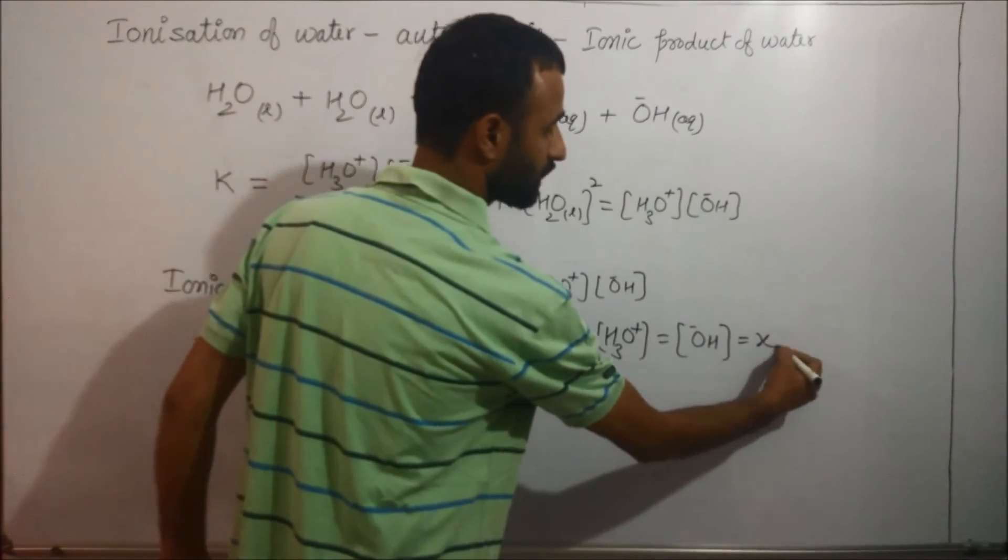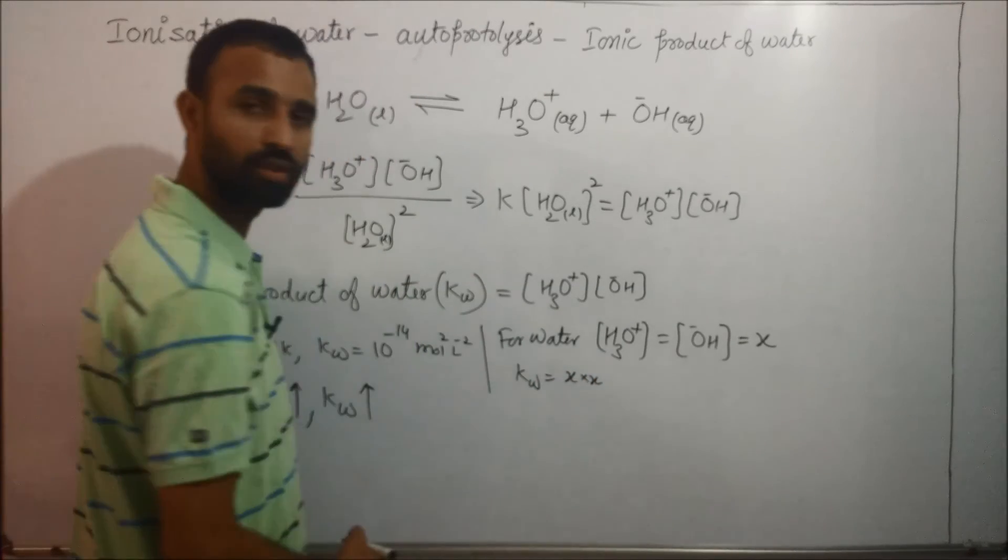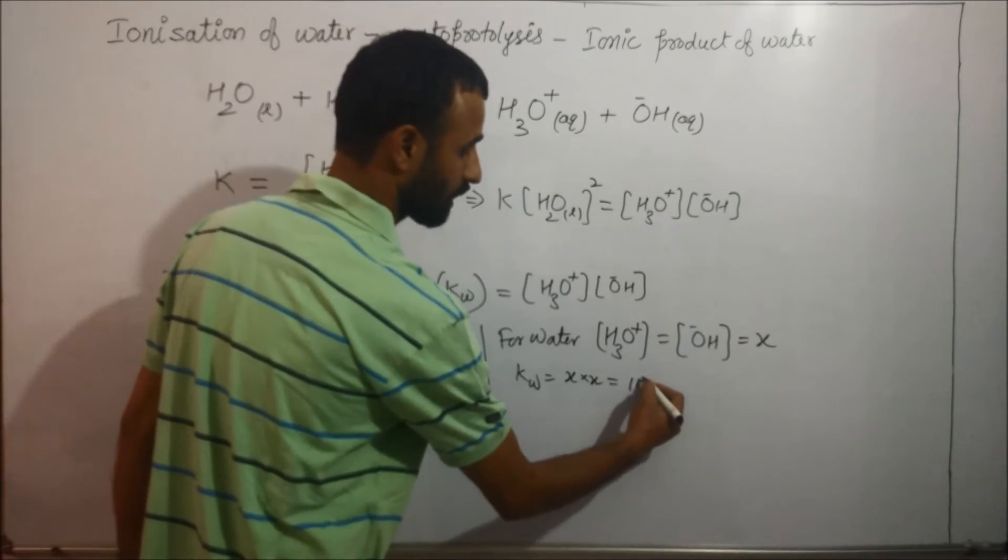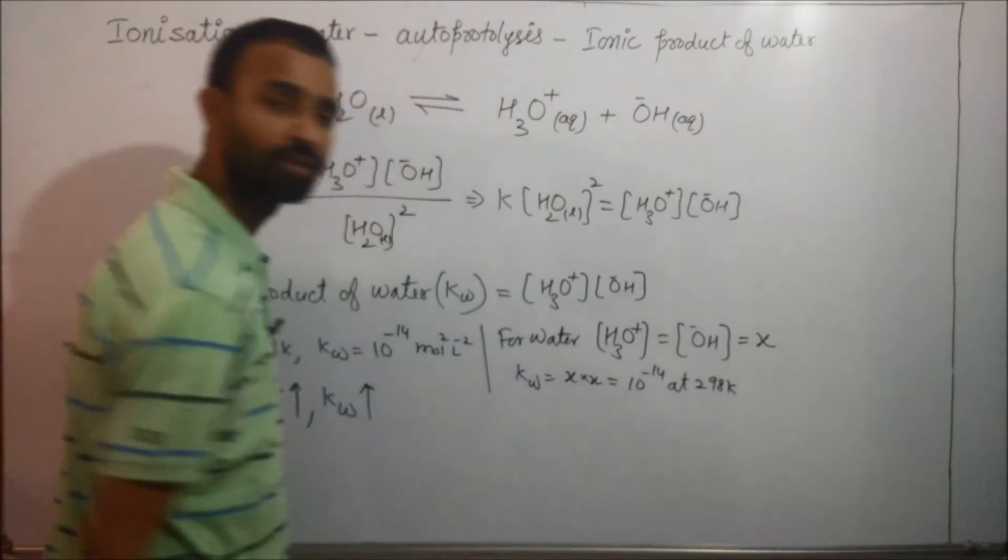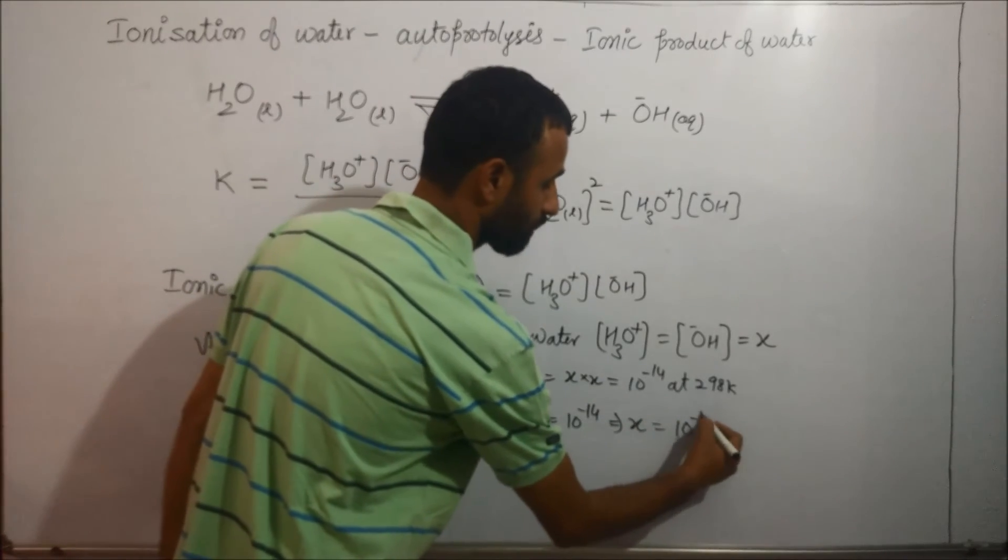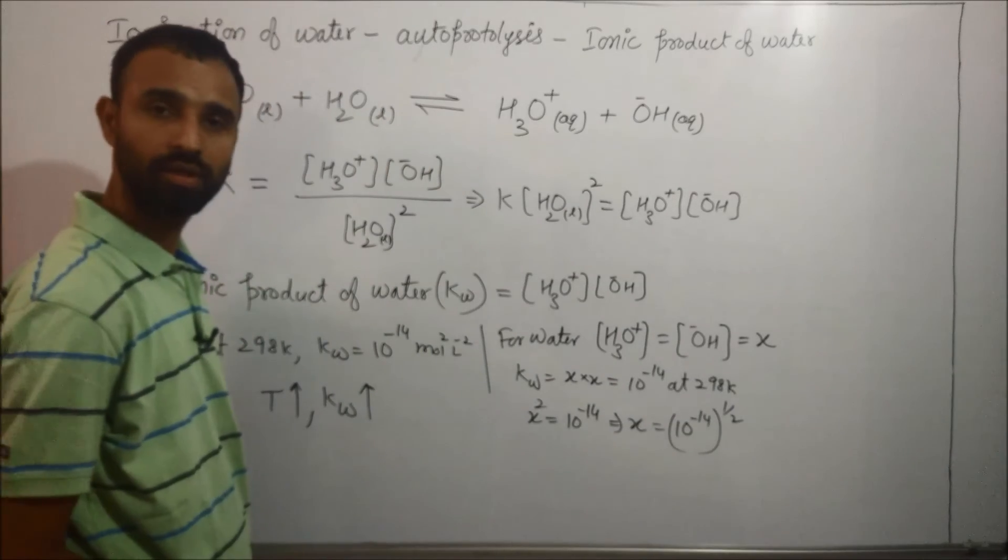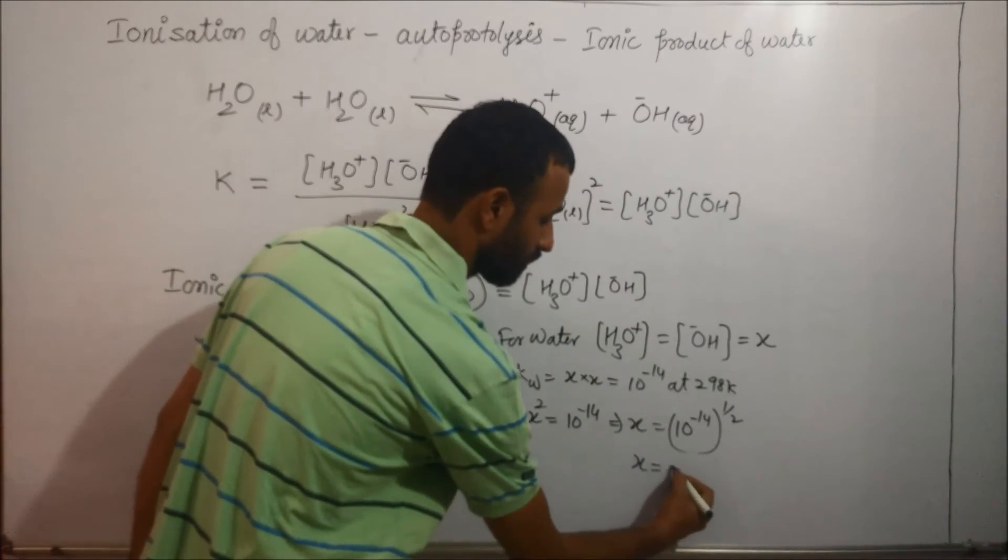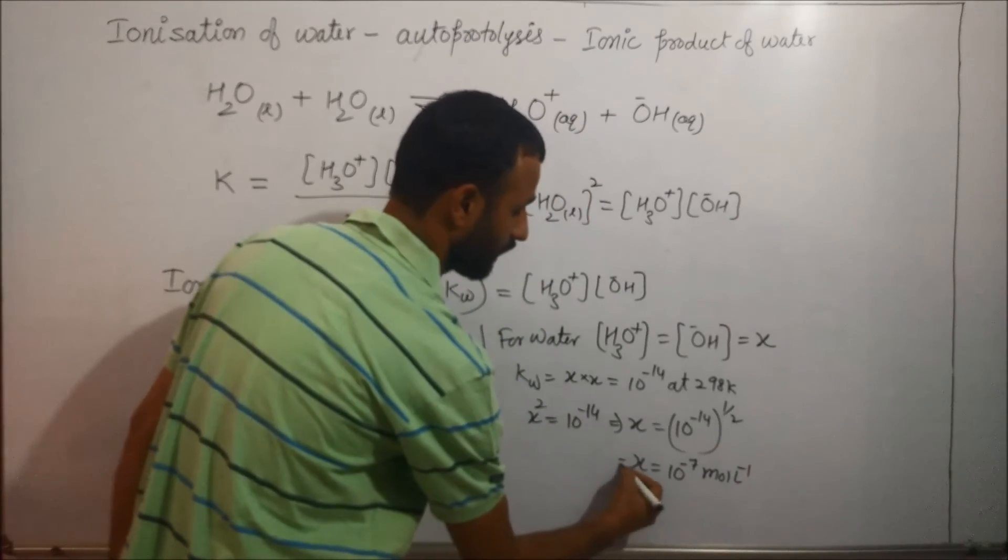So, KW is equal to X into X. And that is equal to 10 raised per minus 14 at 298 Kelvin. It is X squared. X is equal to 10 raised per minus 14 half. So, X is equal to 10 raised per minus 7 mole per liter.